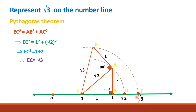Hence F represents square root of 3 on the number line. Likewise, we can represent square root of 5, square root of 6, square root of 7, square root of 8, square root of 9, square root of 10, and so on. This is called the spiral method.